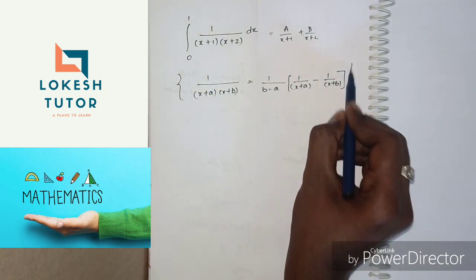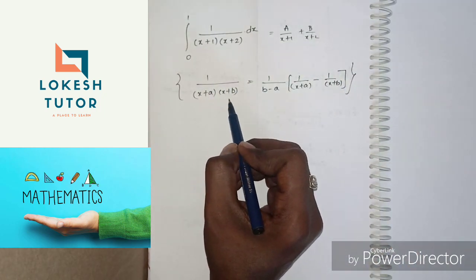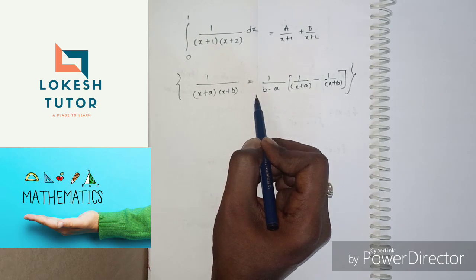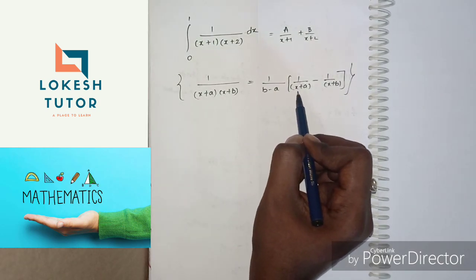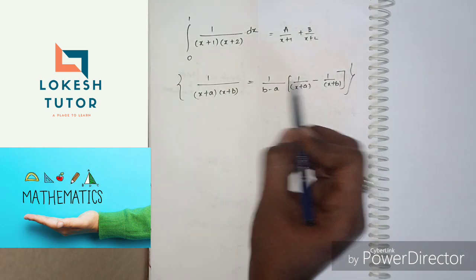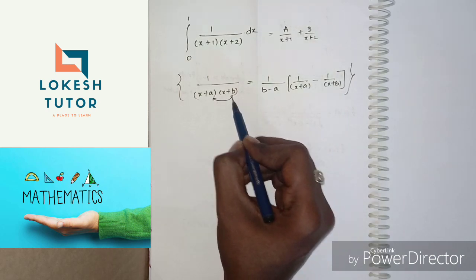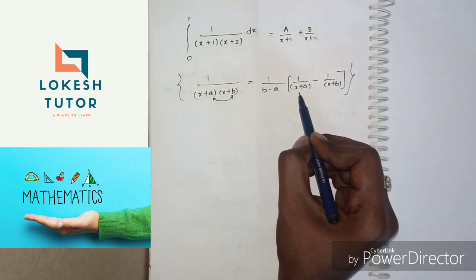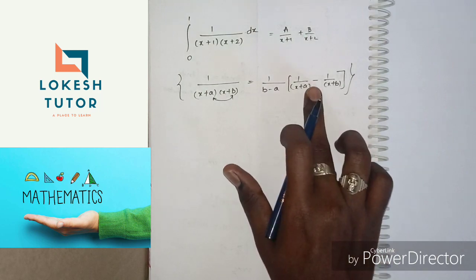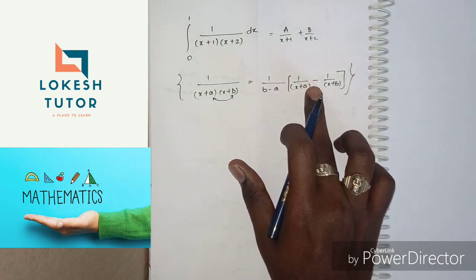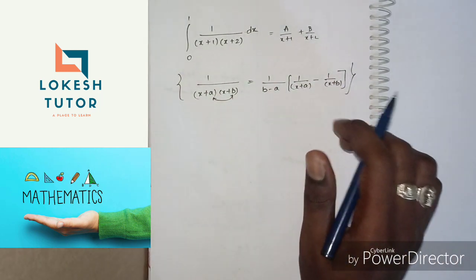So, 1 by (x plus a) into (x plus b) is equal to 1 by (b minus a) into 1 by (x plus a) minus 1 by (x plus b). Note that b minus a will always be in the denominator with the minus sign between the two fractions.